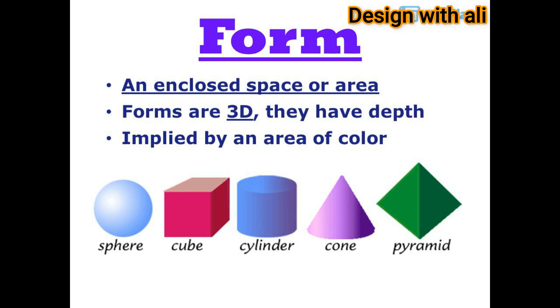Form is an enclosed space or area. Forms are 3D — they have depth. Form is implied by an area of color.